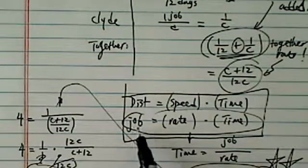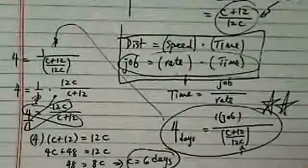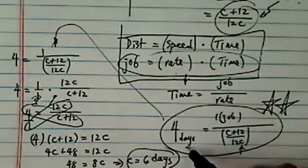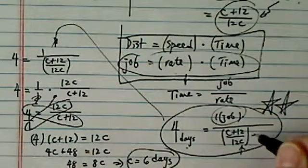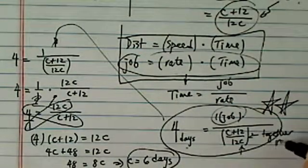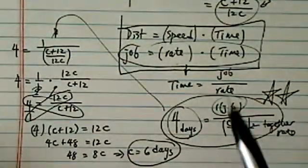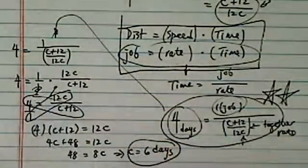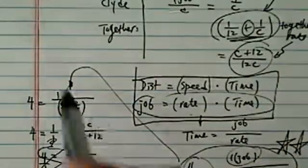One job is equal to the rate times the time. So the together time of 4 days equals the job divided by the together rate. From there, it's pretty much simple algebra to solve the equation, and here's the answer. Alright, hope this helped. Have a confident day.